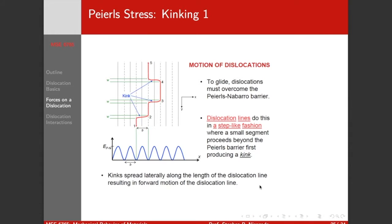So what's the consequence of this Peierls stress? It's really kinking. To glide, dislocations have to overcome the Peierls-Nabarro barrier. We know that we're going to move perpendicular to our dislocation line, but our stress isn't uniform here. We're not going to shift this whole dislocation at once. Dislocations move in a step-like fashion. A small section has enough driving force on it that it will pop over, creating a kink.